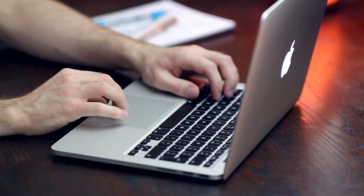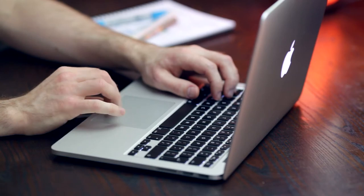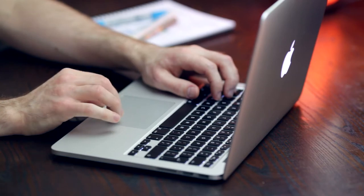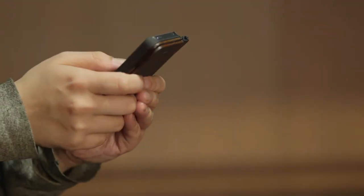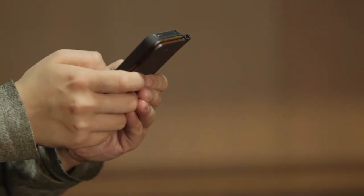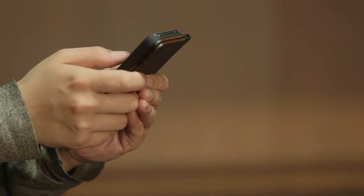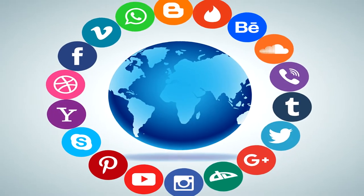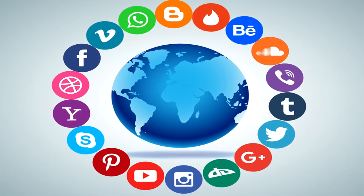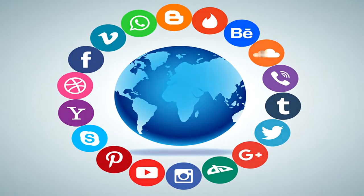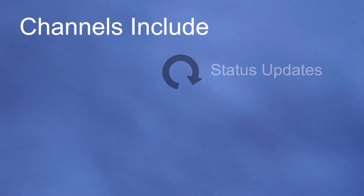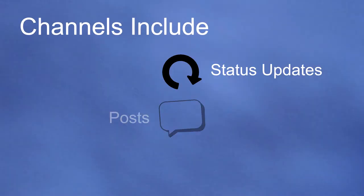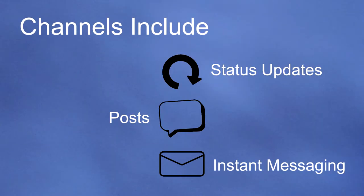Social networks can include people who interact in more traditional online and offline ways, or people who interact purely in the online world. Social media networks consist of built-in communication channels. Depending on the network, channels may include status updates, posts, or instant messaging.